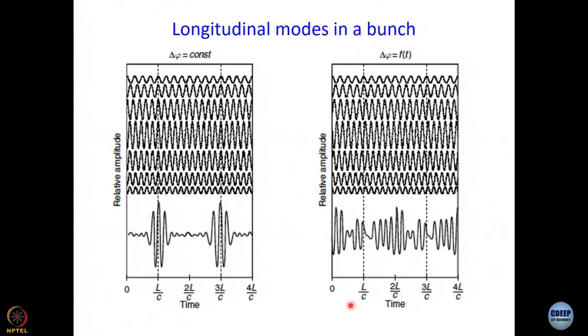Now, let us come back to our discussion where we had stopped in the last module. We said when we take longitudinal modes in a bunch, what do you expect to get? And we have talked about two situations. One in which delta phi is constant. What is delta phi? Phase difference between two successive longitudinal modes.